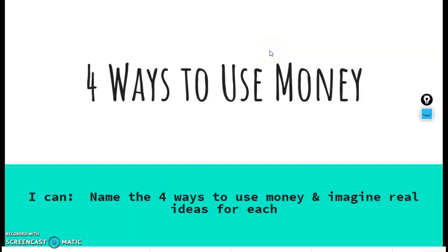Hello, first graders. Today we're going to be learning about four ways to use money. I'm sure that you know what money is and that a lot of you like money. Today we're going to be talking about what you can do with that money. Our I can statement is: name the four ways to use money and imagine real ideas for each. At the end of this lesson, you're going to imagine that you have some money and how you would use it the four different ways.